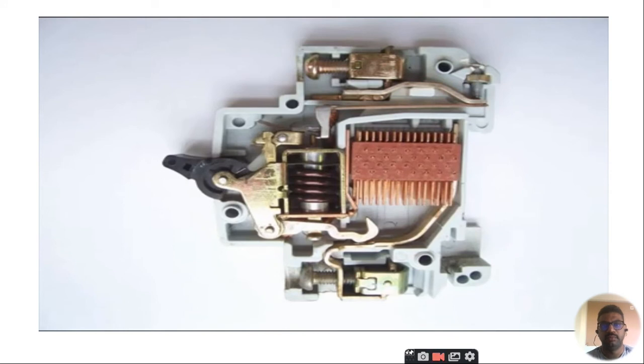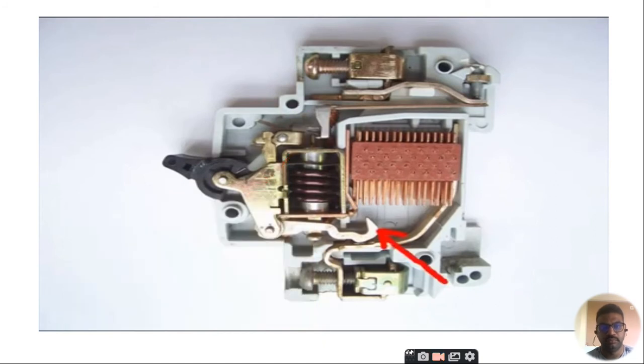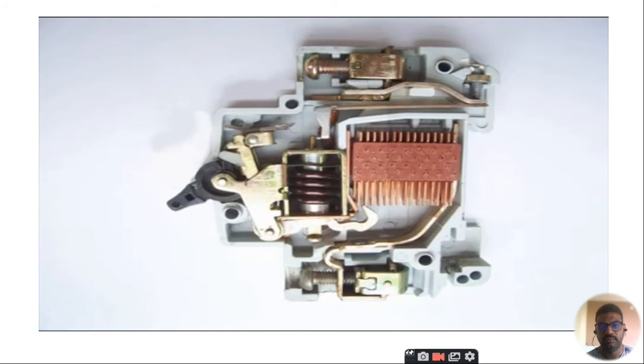If overcurrent flows for long time through this MCB, the bi-metallic strip becomes overheated and hence it is deformed. This deformation of bi-metallic strip causes displacement of latch point. The moving contact is arranged by means of spring pressure with this latch point such that little displacement of latch causes release of spring and makes moving contact move for opening the MCB.